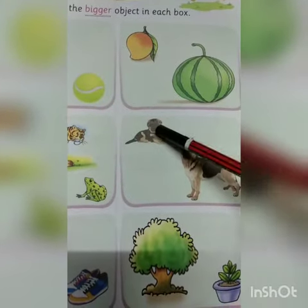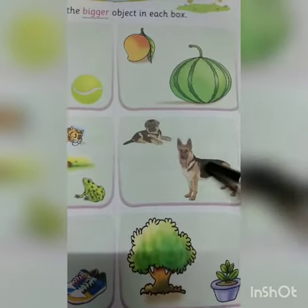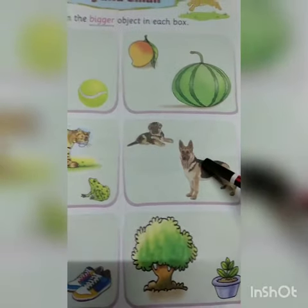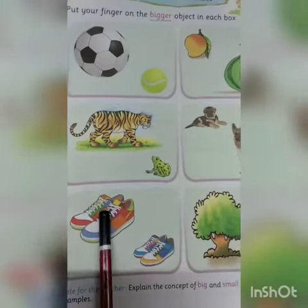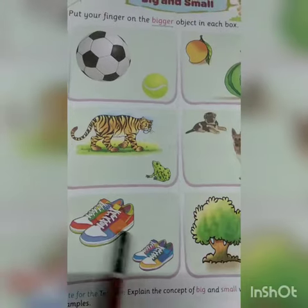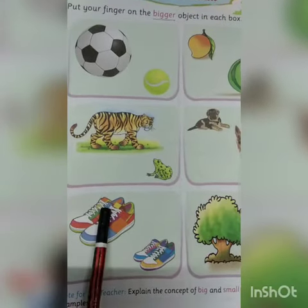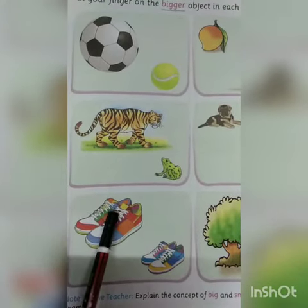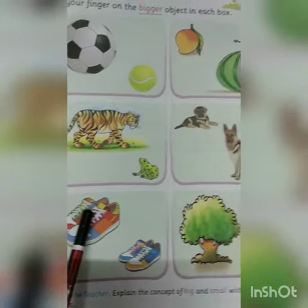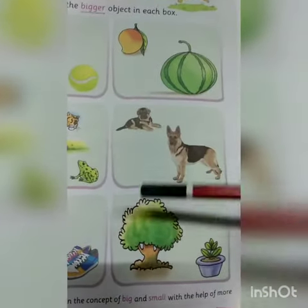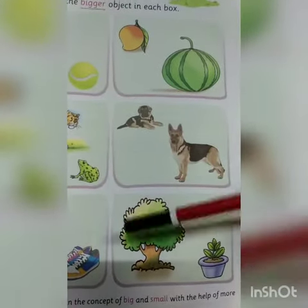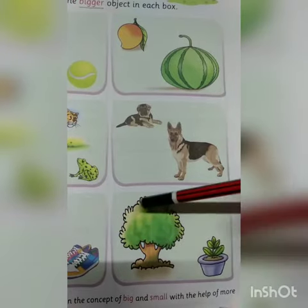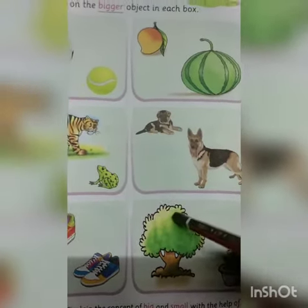This dog is bigger than this dog. Okay? So you have to put your finger on the bigger dog. Next one. This shoe is bigger than this shoe. Okay? So you have to put your finger on this shoe. Next one. This tree is bigger than this plant. Okay? So you have to put your finger on this tree. Okay?